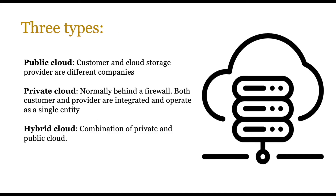There are three main types of cloud. The public cloud is where the customer and the cloud storage provider are different companies — think of your own personal cloud service at home. The private cloud is hidden behind a firewall; both the customer and the provider are integrated and operate as a single entity — for example, Amazon providing services for its own affiliates. Any combination between private and public is known as a hybrid cloud.